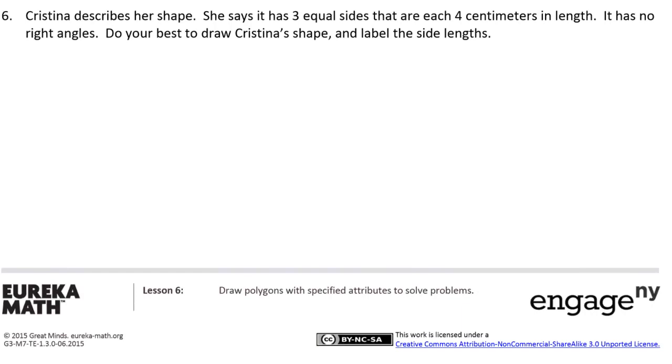Christina describes her shape. She says it has three equal sides that are each four centimeters in length. It has no right angles. Do your best to draw Christina's shape and label the side lengths. Well, what we don't know is that we don't even know how many sides it has, do we?